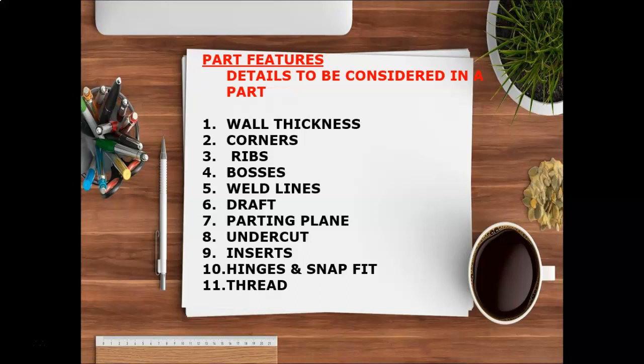There are 11 part features to be considered when designing a thermoplastic part: wall thickness, corners, ribs, bosses, weld line, draft, parting plane, undercut, inserts, hinge and snap, and thread. We will cover all these elements because they are the most commonly used in plastic parts.